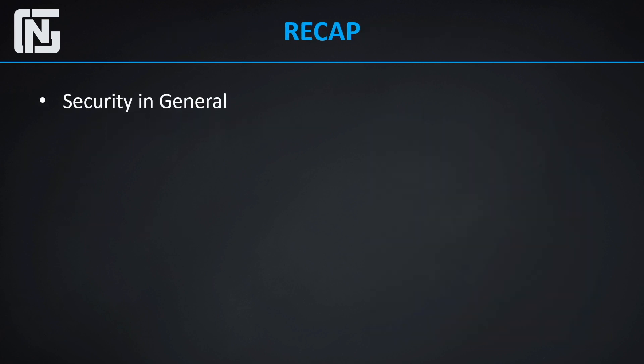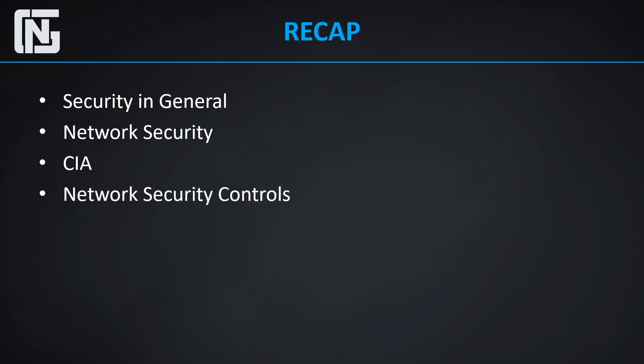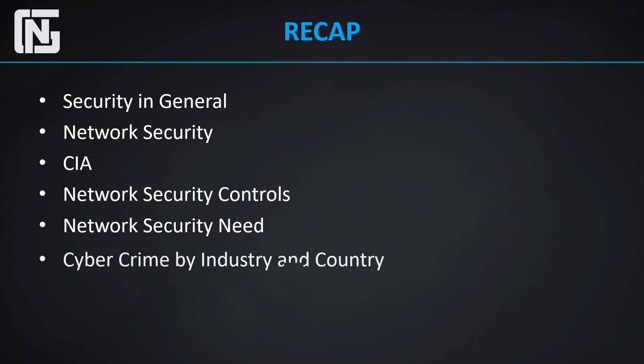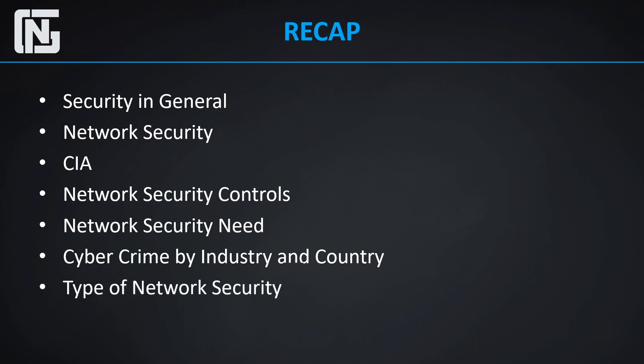Let's do a quick recap. We started off by looking into security in general, then what is network security, then CIA — confidentiality, integrity, and availability — which is the goal of network security. Then we saw the controls for network security, discussed the need for network security, looked into cyber security crimes by industry and country which are rising each year, and finally some of the types of network security.